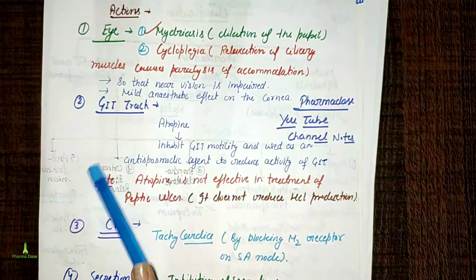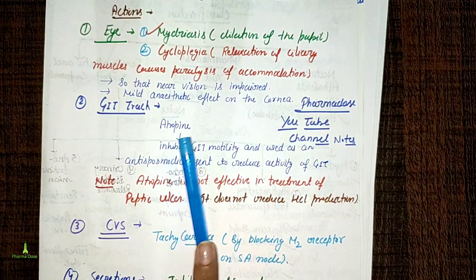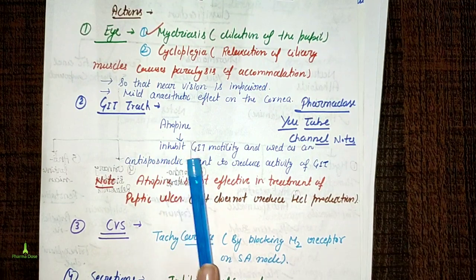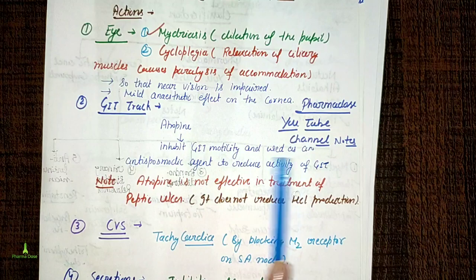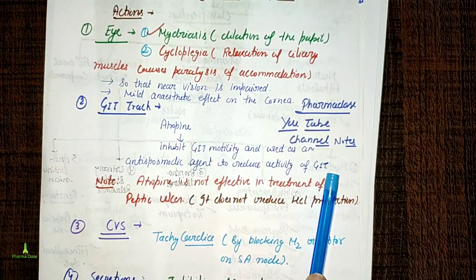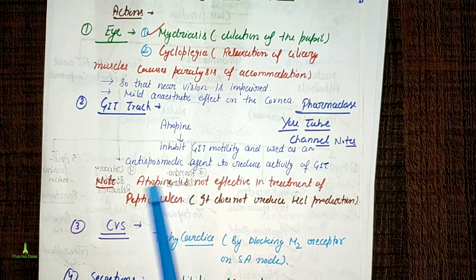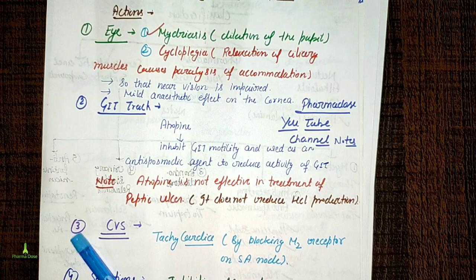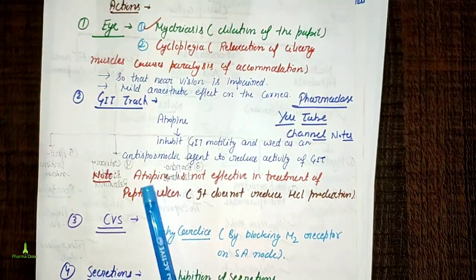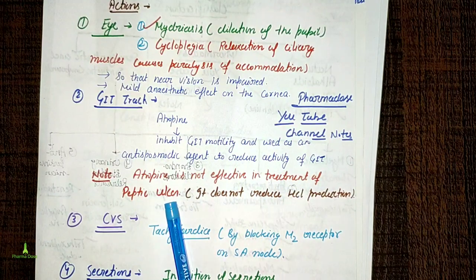The effect of atropine on the GIT: atropine inhibits GIT motility and is used as an anti-spasmodic agent to reduce activity of the GIT. Whereas cholinergic agonists enhance GIT motility, atropine inhibits it, leading to reduced motility and constipation.